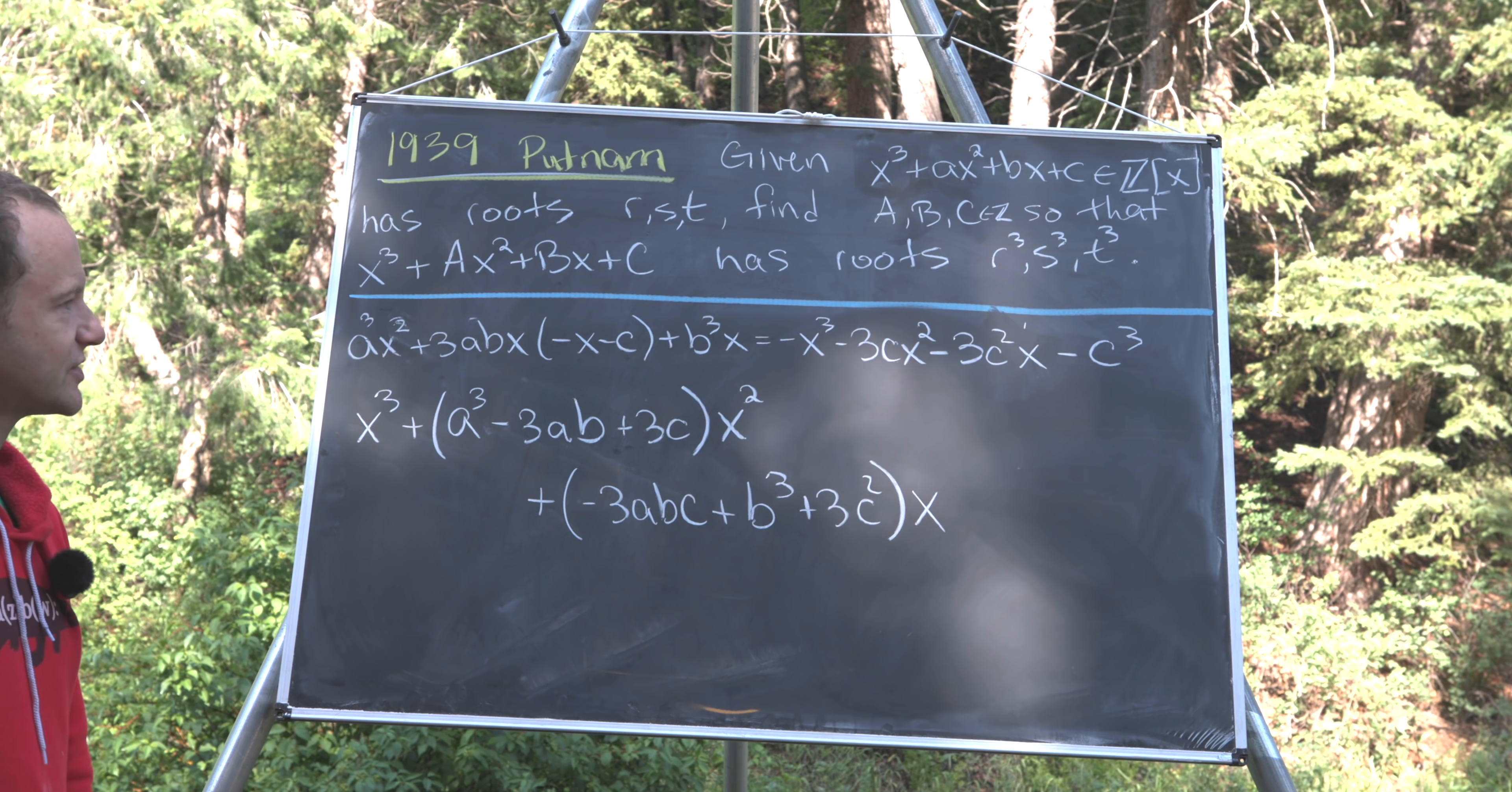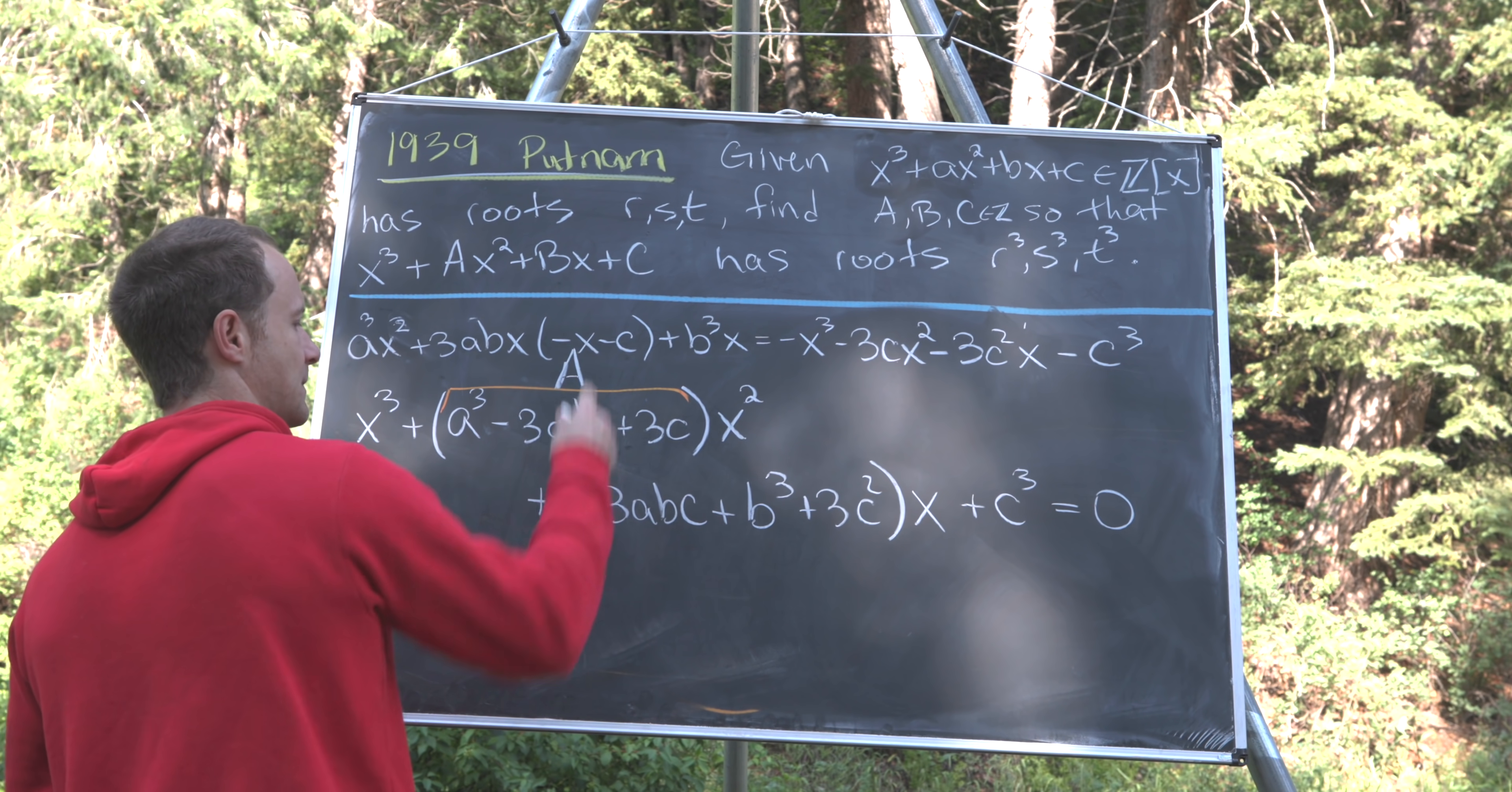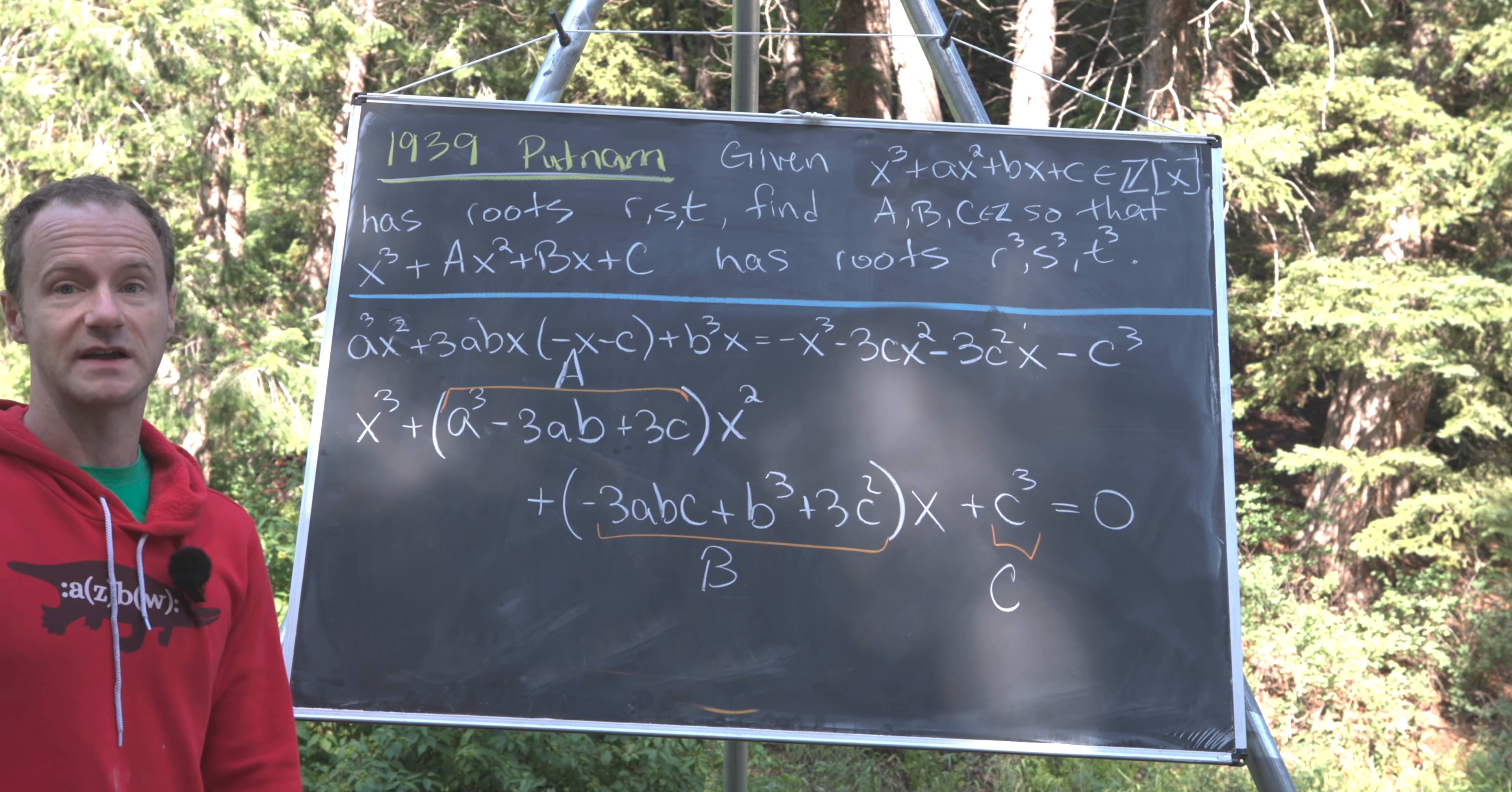Now let's see what our constant term is. Well, that's actually pretty easy. We can just move this c³ over and we'll get plus c³ = 0. So we can extract all of this into capital A, all of this into capital B, and then finally c³ is equal to capital C. And that finishes off what the problem is asking us to find. And that's a good place to stop.